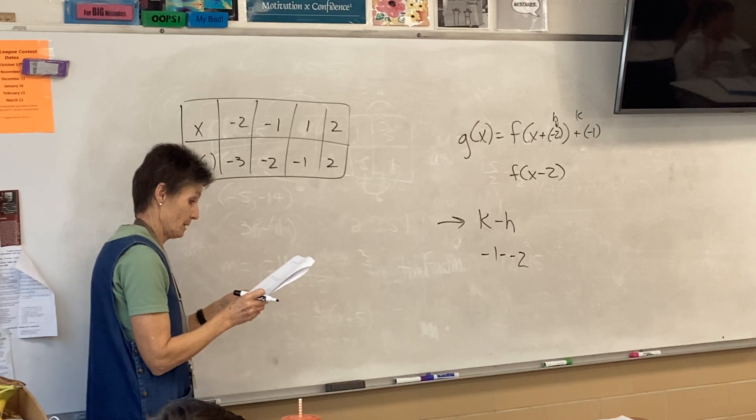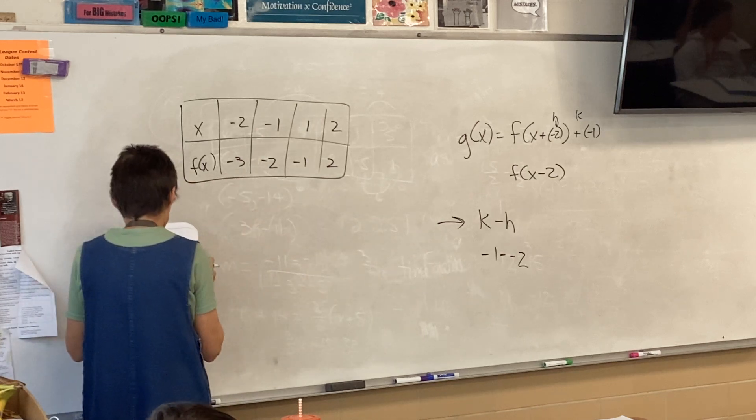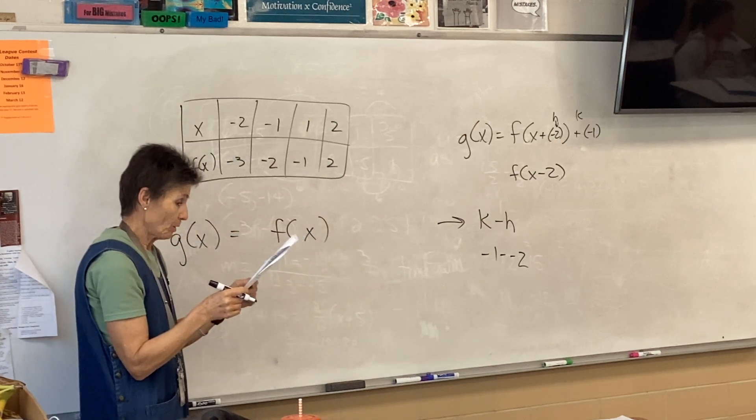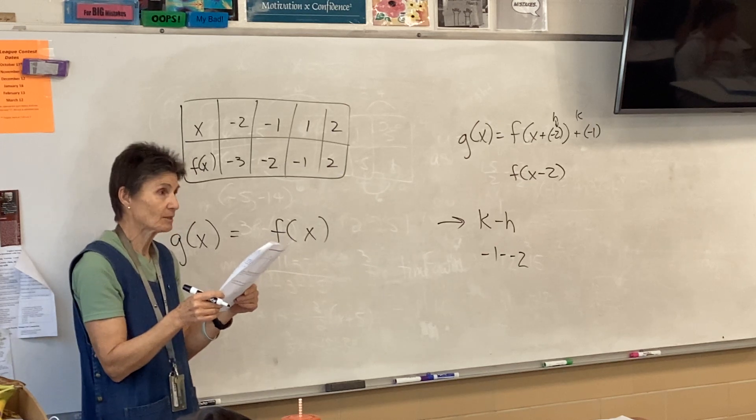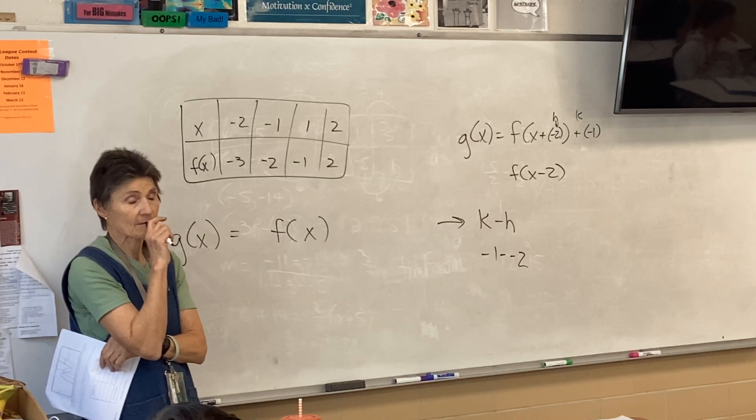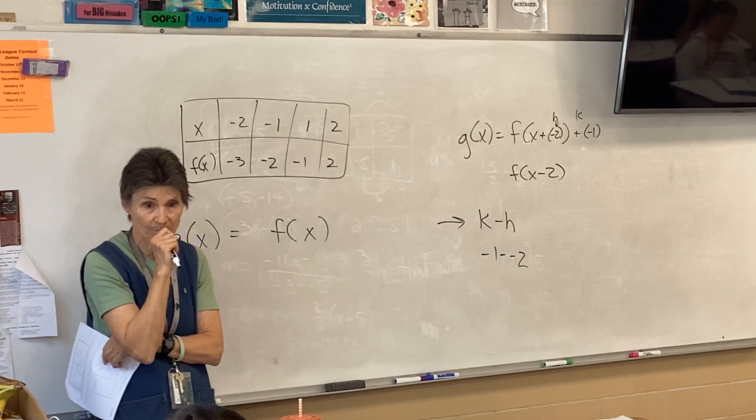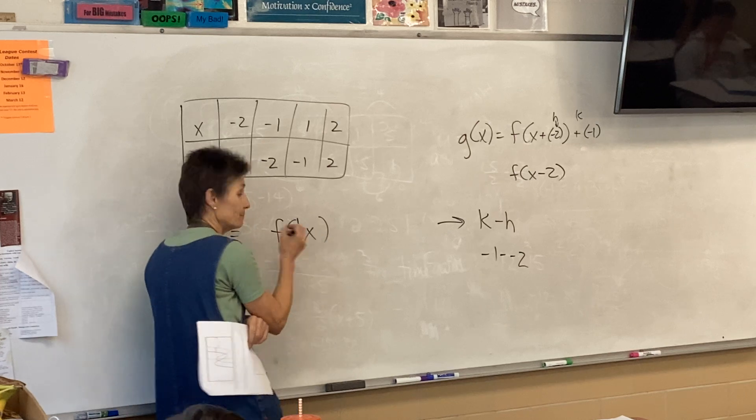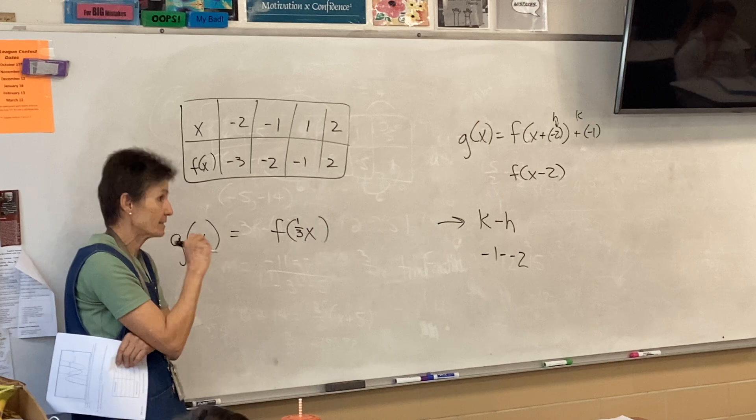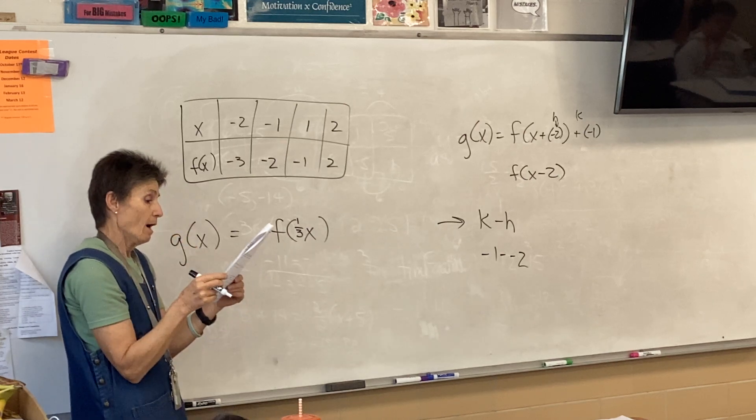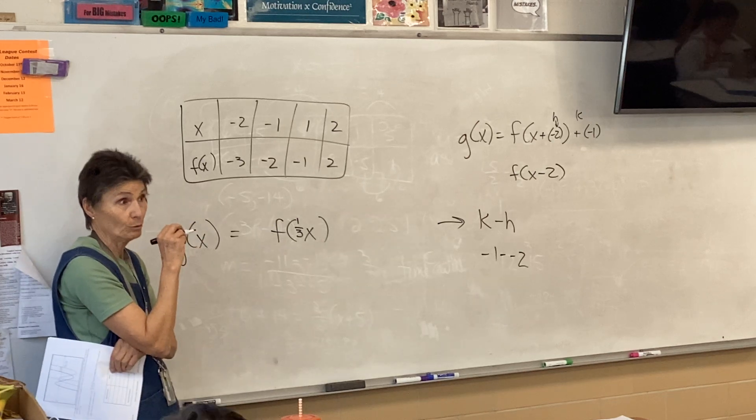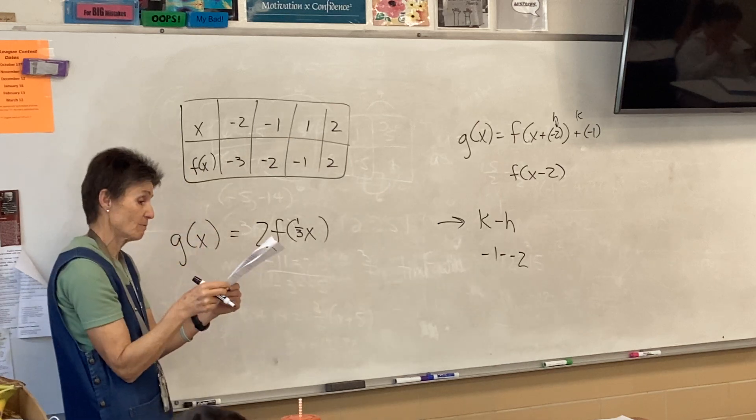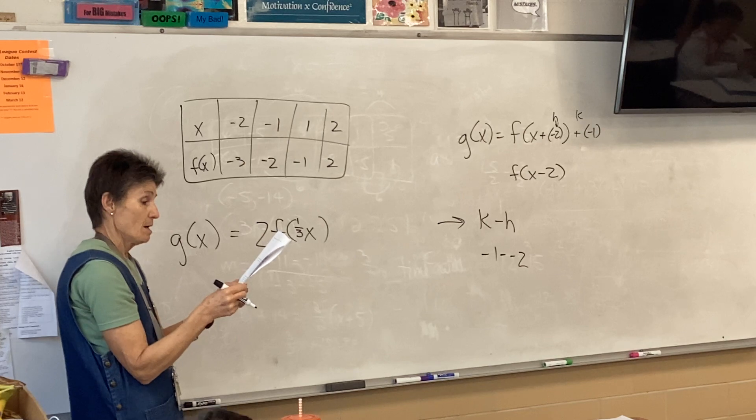Okay. Let g of x equal... So, we are going to do a bunch of transformations to this. So, g of x. We're going to do something to f of x. All right. So, what are we doing? A horizontal dilation by a factor of three. So, that means we are multiplying the horizontal by three, which means this number right here has to be a one-third. That's how you multiply horizontally by three. A vertical dilation by a factor of two. What does that mean? Two. That number multiplies the height, multiplies the vertical.